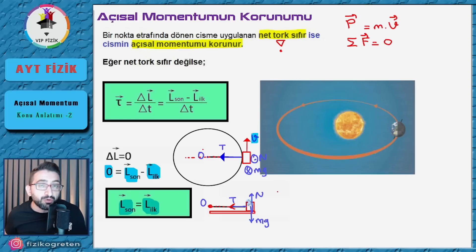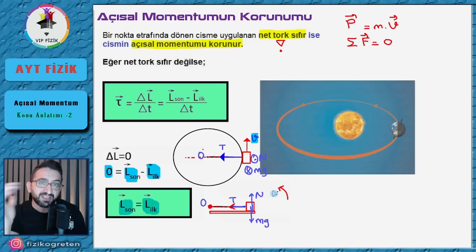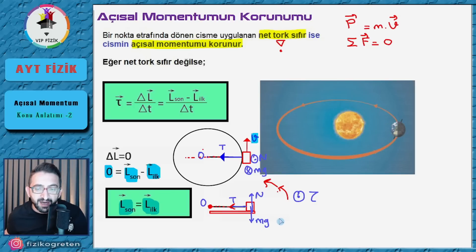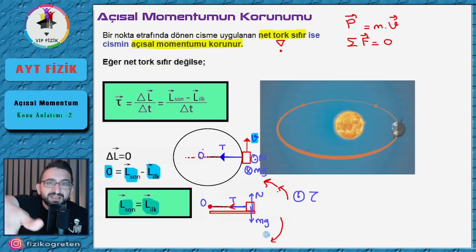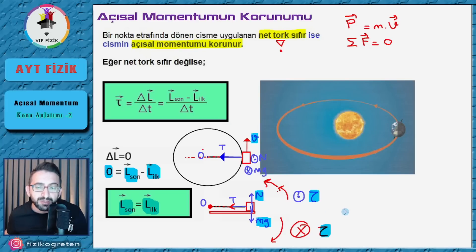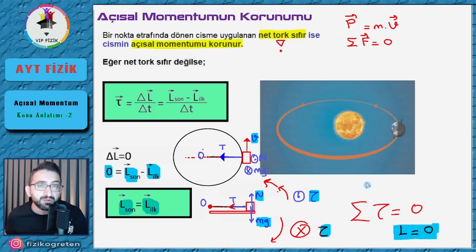Peki N'nin ya da Mg'nin torku yok mu? Var, çünkü onların uzantısı dönme noktasından geçmiyor. N'nin torku yukarı doğru çubuğu çevirmeye çalışıyor; sağ el kuralıyla nokta yönünde bir tork oluşuyor. Mg ise tam tersine çarpı yönünde bir tork oluşturuyor. Bu iki torkun büyüklükleri birbirine eşit olduğu için birbirini götürüyor. Toplam tork sıfır olduğu için bu sistemin açsal momentumu korunuyor.